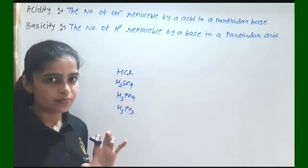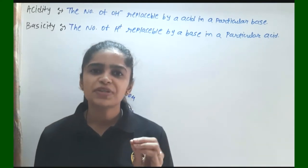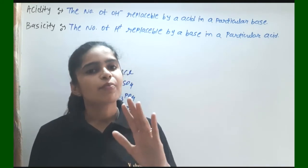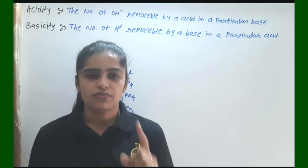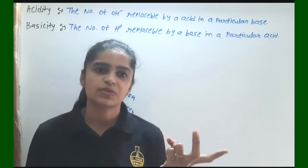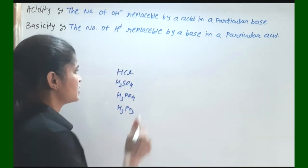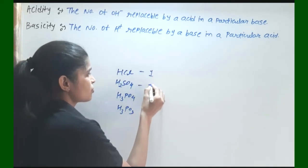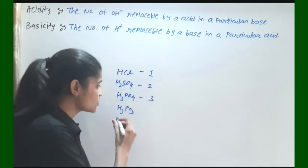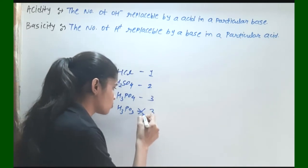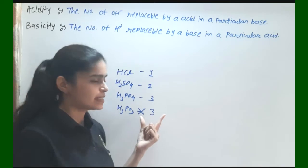These are all acids. In our mind we might think that where one H is present, basicity is 1; where two H are present, basicity is 2. So for HCl, basicity is 1; H₂SO₄, basicity is 2; H₃PO₄ is 3. But H₃PO₃ is not 3. So how do we properly define the acidity and basicity factor?